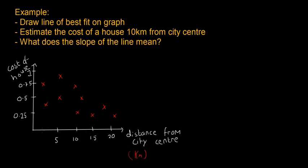These x's show houses that are this far and cost this much. This house is 5 kilometers and costs half a million. And as you get further away, the houses become less and less expensive. So anyway, draw the line of best fit on the graph.